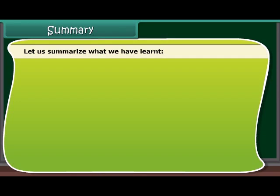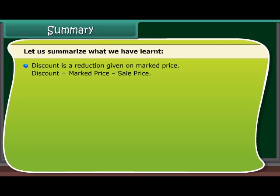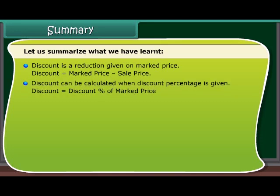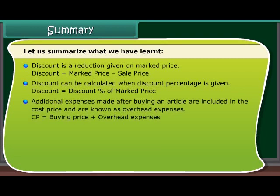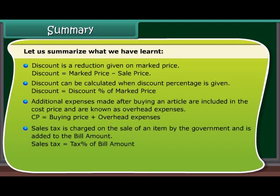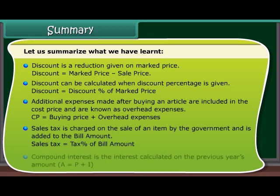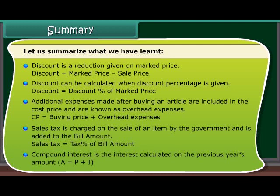Summary: Discount is a reduction given on the marked price. Discount equals marked price minus sale price. Discount equals discount percentage of marked price. Additional expenses after buying an article are included in the cost price as overhead expenses. CP equals buying price plus overhead expenses. Sales tax is charged on the sale of an item by the government and added to the bill amount. Sales tax equals tax percentage of bill amount. Compound interest is the interest calculated on the previous year's amount. Amount A equals P plus I.